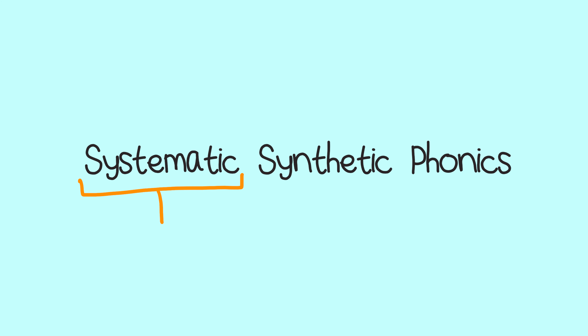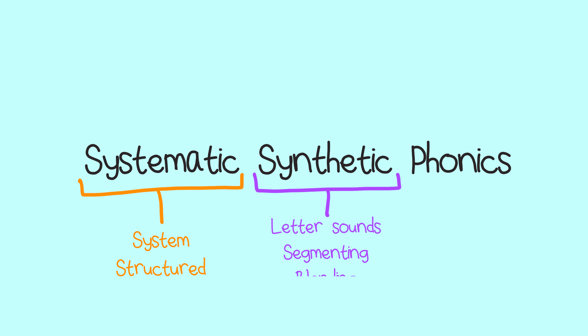The second question I get asked a lot is: what is systematic synthetic phonics? We usually just say phonics, but you may also hear it referred to as systematic synthetic phonics, which makes it sound very fancy and complicated. We can break that down pretty easily: systematic means a system or structured way to read by breaking up words into their individual sounds, and synthetic means synthesizing — blending those sounds together to read the full word.